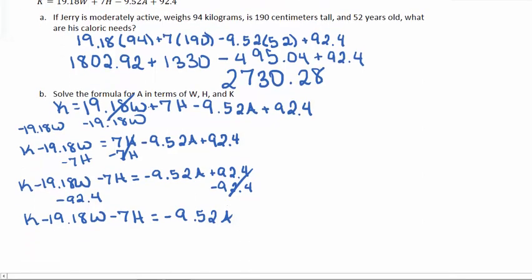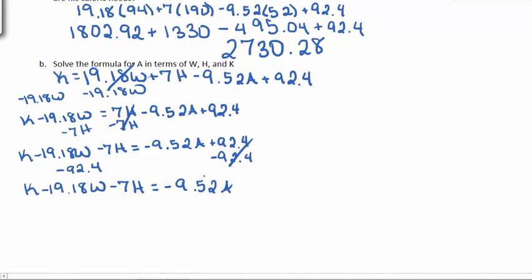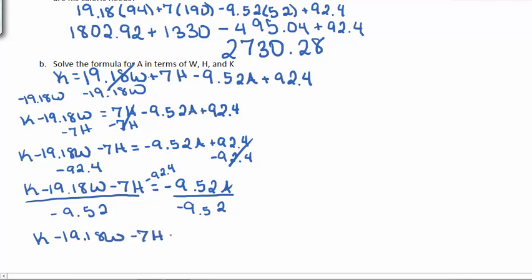So at this point, I have the A by itself. I just need to get rid of the number in front. So I'll divide both sides by negative 9.52. And it looks like I forgot to add in the minus 92.4 here. So my final answer: K minus 19.18 W minus 7H minus the 92.4, all over negative 9.52, and this will be equal to A.